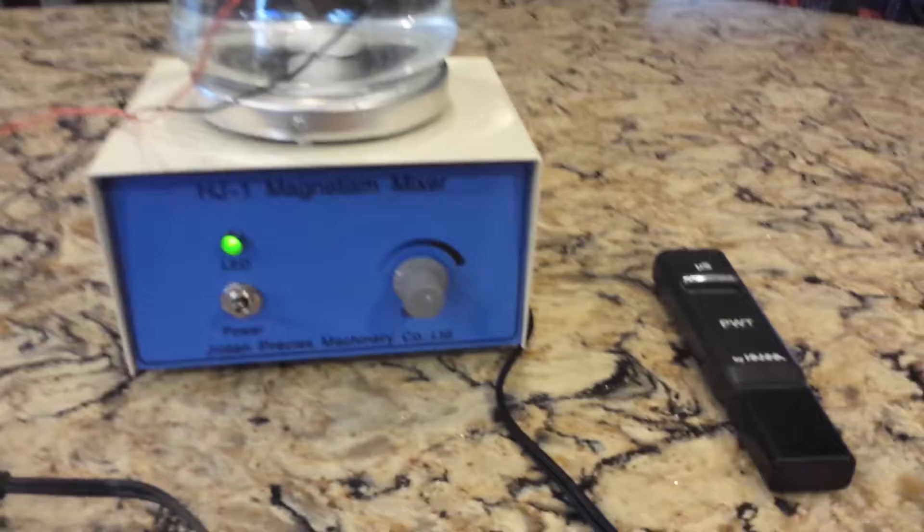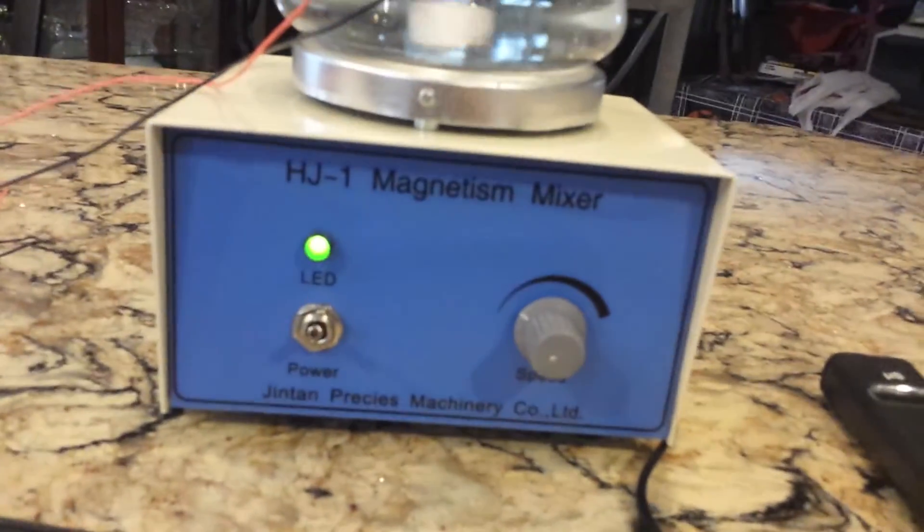I bought this magnetic stirrer off eBay for about $80.